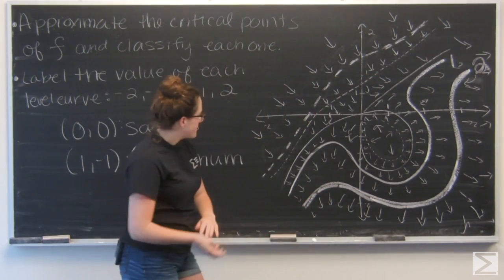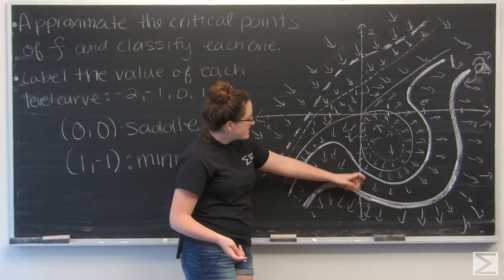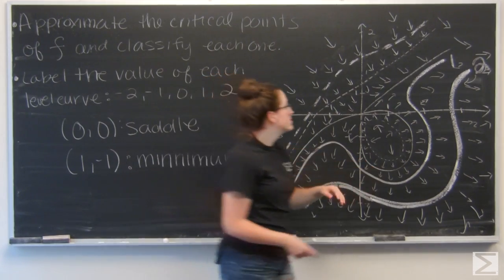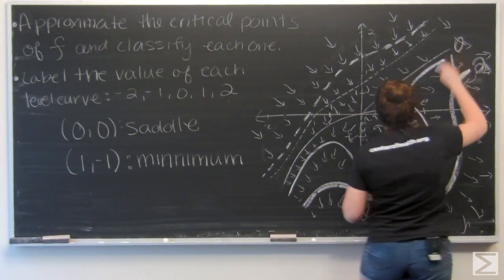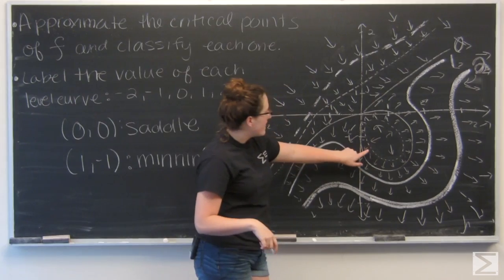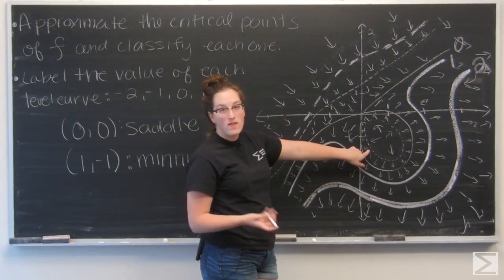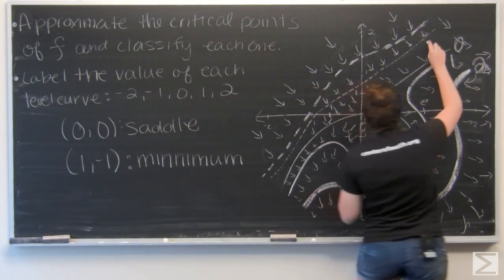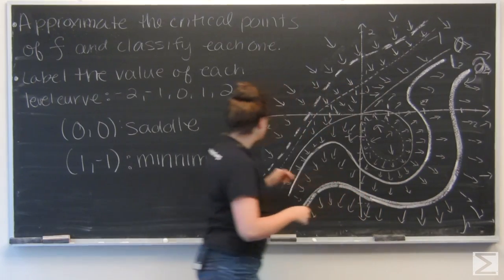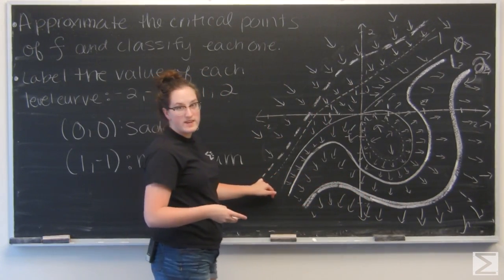And then the next curve, if I'm decreasing, is the thin line. So I'm going to call that 0. And then inside of that, I have the thin dashed line. So I'm going to call that -1. And then that leaves the thick dashed line to be -2.